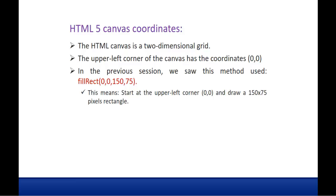The HTML canvas is a two-dimensional grid. The upper left corner of the canvas is the coordinates origin. In the last session we learnt how to draw a rectangle with the help of the method fillRect, which takes four parameters. These two parameters tell the starting position — the rectangle should be drawn from the upper left corner — and 150x75 pixels defines the width and height. The 0,0 represents the upper left corner, where the first parameter is the x-axis and the second is the y-axis.